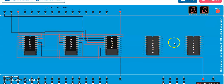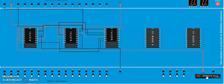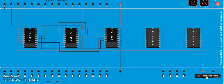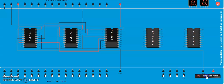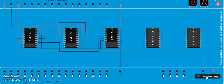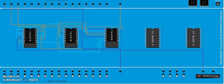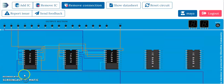Switch on the trainer kit and observe the output. It started with 1 — provide the clock: 2, 3, 4, 5, and it resets. It is mod 6. Check again: 4, 5, 6, then 0. Now you can do the necessary changes for mod 7 and mod 5 in the same way. I'll end this video here, thank you.